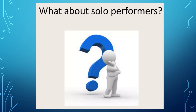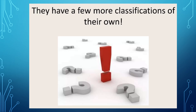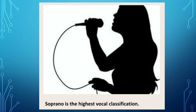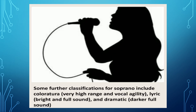We are now going to discuss the voices of solo performers. For females, we have the soprano — soprano is the highest vocal classification for females. Further classifications for soprano include coloratura, which is the very high range with vocal agility, lyric, which has a bright and full sound, and dramatic, which has a darker, full sound.